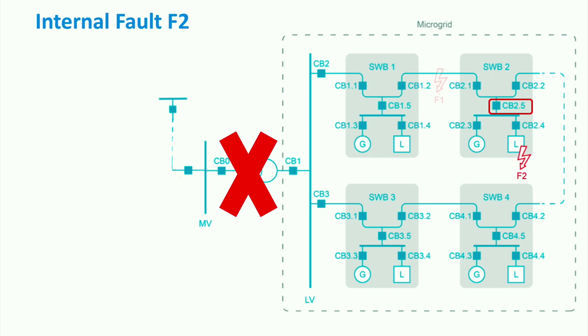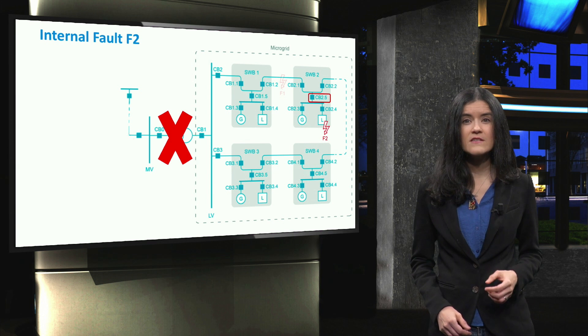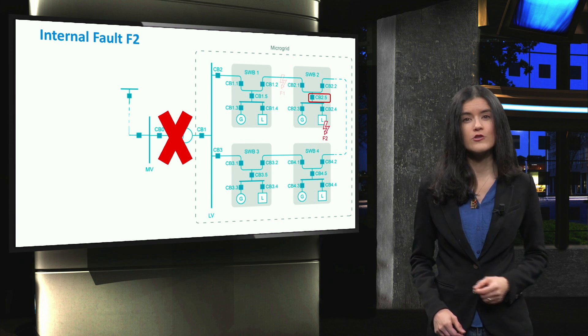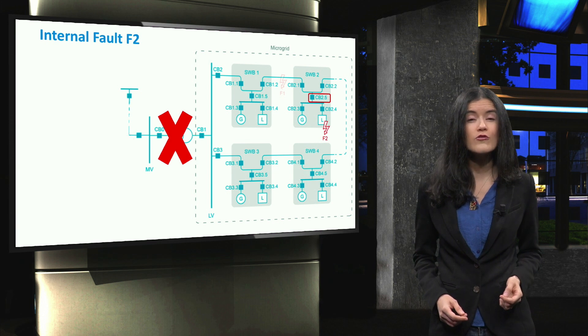It is worth noting that both the protection settings of CB2.4 and CB2.5 can be different during grid-connected and islanded modes of operation, since these two breakers are required to trip at much lower overcurrents during islanded mode.